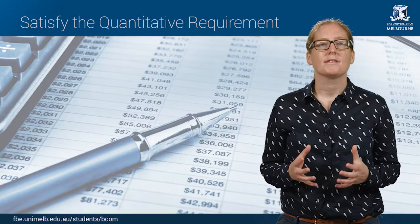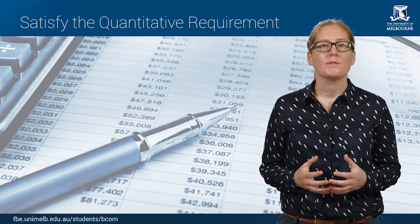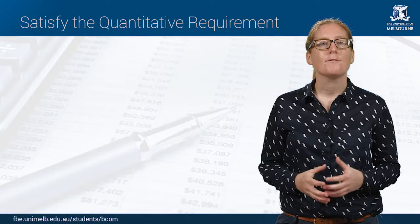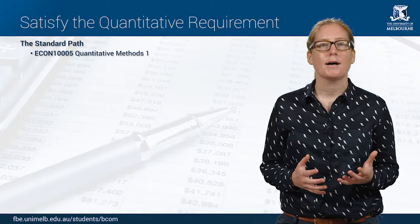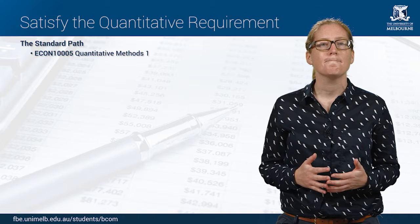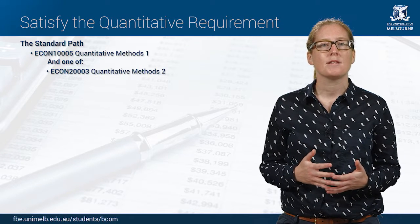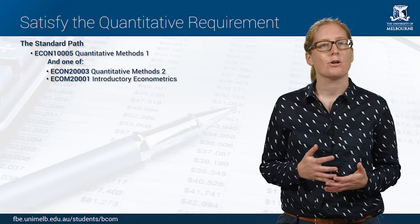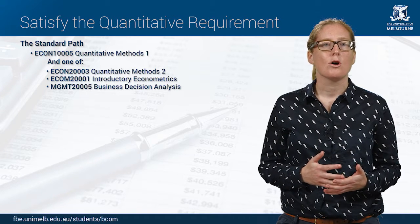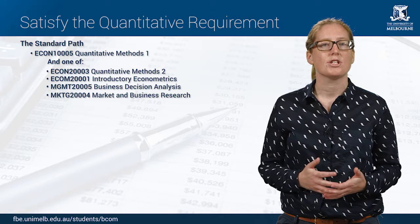There are two ways that you can meet the BCom's quantitative requirement: the standard path and the maths path. If you take the standard path you will need to complete quantitative methods one at level one, and then one of quantitative methods two, introductory econometrics, business decision analysis, or market and business research at level two.